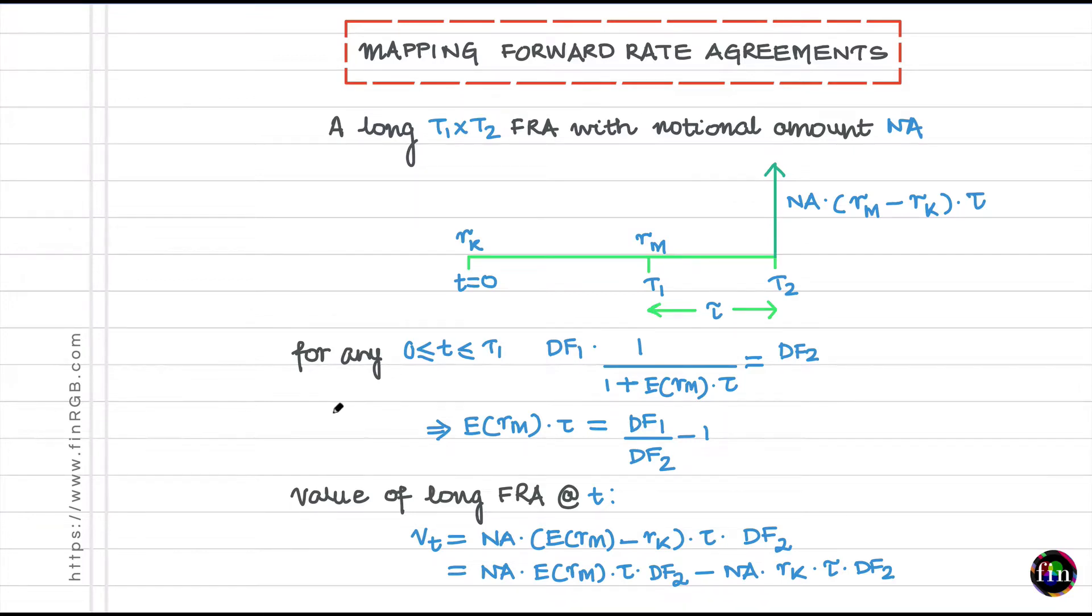Mapping a forward rate agreement. I am assuming that we are talking about a T1 cross T2 FRA. It is a long position in this FRA and I am assuming that the notional amount of this FRA is NA. Therefore, what do I receive as a party with this long FRA?